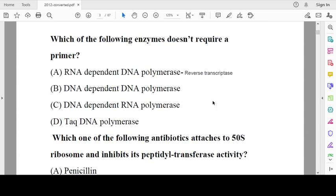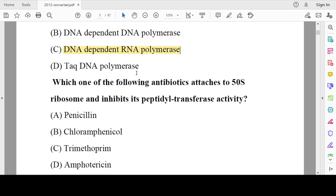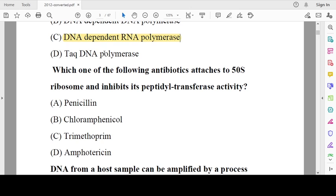Which of the following enzymes doesn't require a primer? DNA-dependent RNA polymerase does not need a primer for synthesis. RNA-dependent DNA polymerase means reverse transcriptase. DNA-dependent DNA polymerase is the enzyme involved in DNA replication and requires a short stretch of nucleotide. Tag polymerase also requires a primer; it is used in PCR and is isolated from Thermus aquaticus because it is heat resistant.